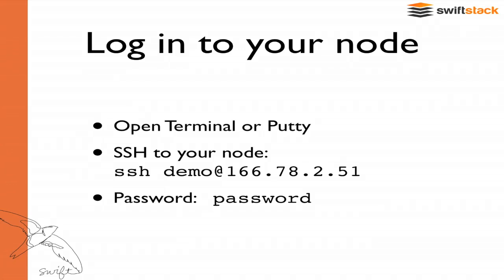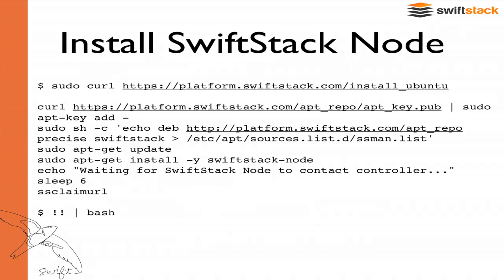The next thing is to log into the instance and do the Swift install. There's a command to run — Hugo will be running it. We're going to curl a set of commands from this URL: HTTPS platform.swiftstack.com/install_ubuntu. That's just going to spit out a bunch of commands, and we're doing it this way so we can see what's happening. You can pipe this into bash if you really trust us, but as administrators I wouldn't recommend trusting anyone all that much. You can see the commands and then pipe them to bash to execute them all.